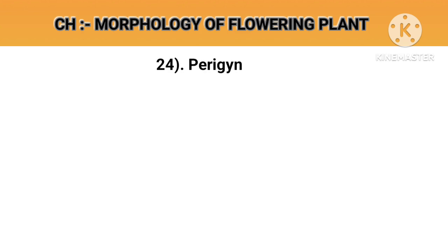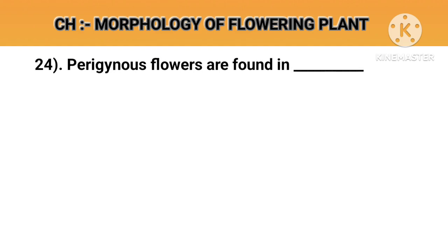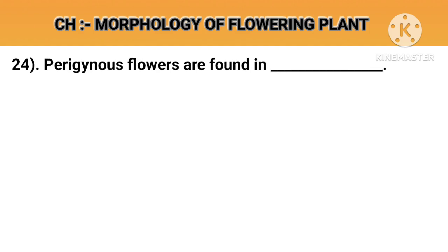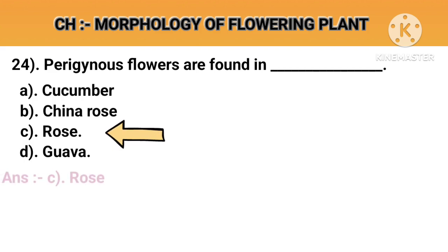Question number 24. Perigynous flowers are found in. Option A: Cucumber. Option B: China rose. Option C: Rose. Option D: Guava. Answer C: Rose.